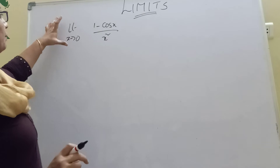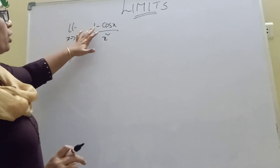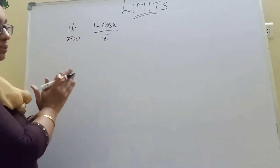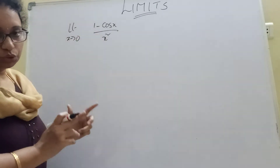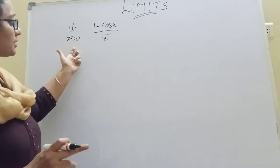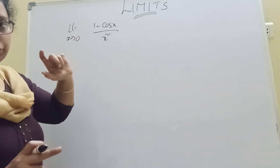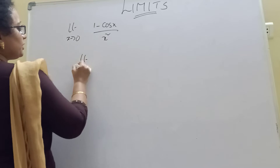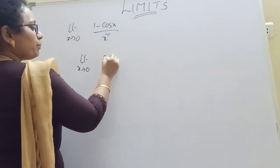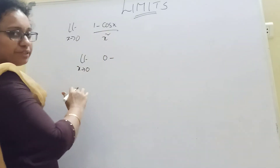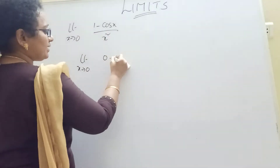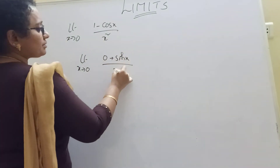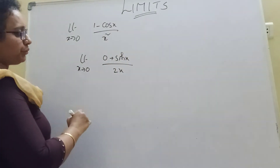Next model: this is limit x tends to 0, 1 minus cos x by x squared. Okay, now if you take the derivative first, then x tends to 0 is applied to x squared. You can limit x tends to 0 — 0 minus cos x — that gives plus sin x by the derivative of x squared, which is 2x.